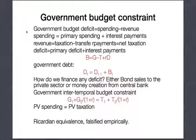If there are only two periods in the world, then there's an intertemporal budget constraint. For the two-period case, G1 plus G2 divided by 1 plus R equals T1 plus T2 — the present value of spending has to equal the present value of taxation. If you believe this story, you believe in a version of what's called Ricardian equivalence — a lovely theory that's been falsified empirically by a load of ugly, nasty facts.